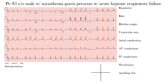Then we'll look at the rhythm origin — is it originating from within the atria, the AV node, or the ventricles? Next we find the ventricular or QRS axis, which helps with our differential diagnosis. Then we assess atrial, atrioventricular, and intraventricular conduction — is conduction within all of these normal or abnormal? We'll also look at the waveforms, which includes all waves, segments, and intervals, and finally anything else we may have missed.